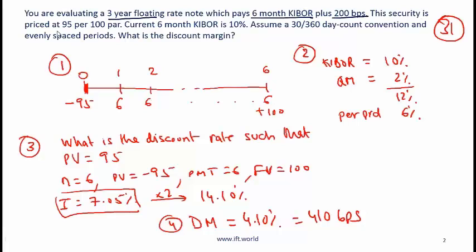This security is priced at 95 per 100 par, so 95 is the current price. Current 6 month KIBOR is 10%. KIBOR is the Karachi Interbank offer rate. It is effectively like LIBOR. This is our reference rate. Assume a 30/360 day count convention and evenly spaced periods.